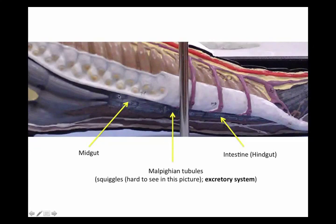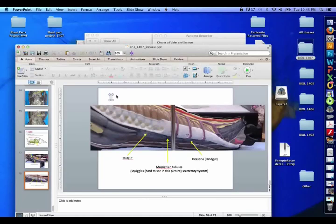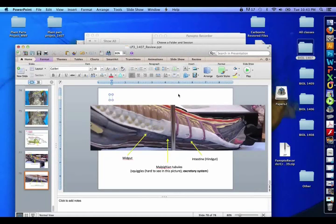Looking more closely, here is the midgut with the gastric ceca. And then there are all these squiggles — they might be purplish. Those are malpigian tubules, which are the excretory system of the grasshopper. Insects have malpigian tubules.